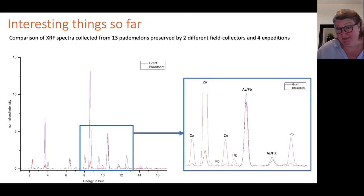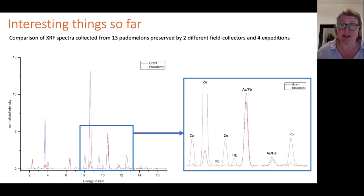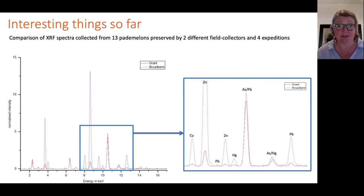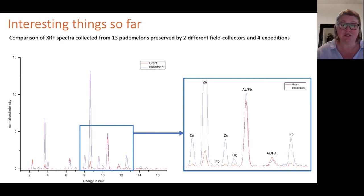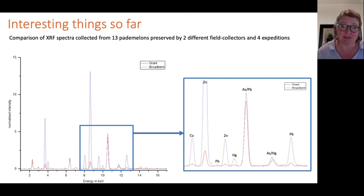Perhaps the most exciting finding is that field collectors appear to have consistently used the same or very similar recipes. Comparing 13 pademelons from the Australian Museum collected over four different expeditions, Robert Grant's specimens consistently looked the same, and Kendall Broadbent's specimens were also consistent — and consistently different from Grant's. Broadbent used mercury, lead, copper and zinc in his recipe, while Grant's relied heavily on arsenic, suggesting field collectors can be differentiated using elemental analysis.